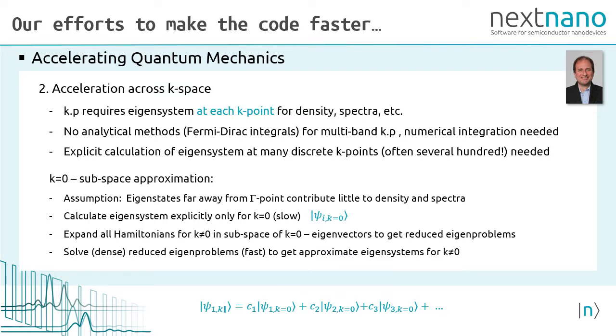The next acceleration occurs across the k-space. The k dot p model requires the eigensystem to be solved at each k point to obtain the density and the spectra. In contrast to the single band model where we have analytical methods for the Fermi-Dirac integrals, we don't have this for k dot p, therefore a numerical integration over all k points is needed. That is, we have to explicitly calculate the eigensystem at many discrete k points. Therefore, because this is very time consuming, we have developed a so-called subspace approximation.